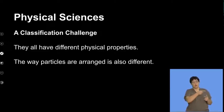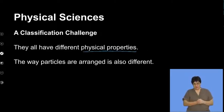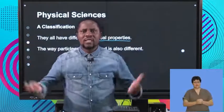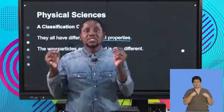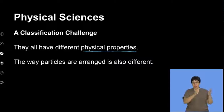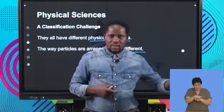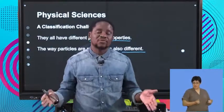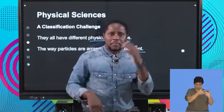They all have different properties — these six materials. Our focus is on the physical properties. When we talk about physical properties, we're talking about the macroscopic properties of materials: electrical conductivity, density, malleability, ductility, boiling points, melting points — the list goes on. The way particles are arranged will also be different. The packaging of materials would definitely influence the physical properties. We'll look at one property at a time and begin to eliminate as we go along.